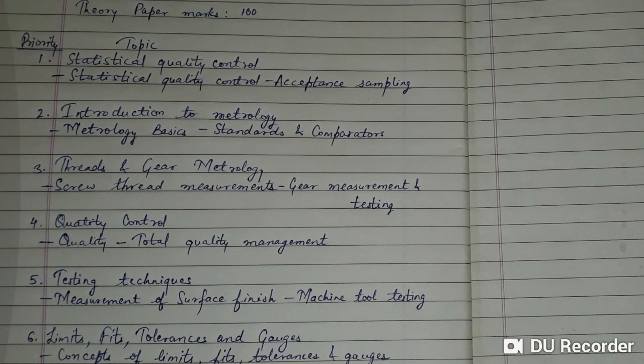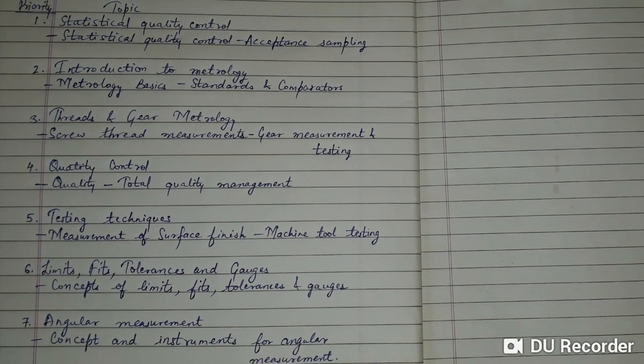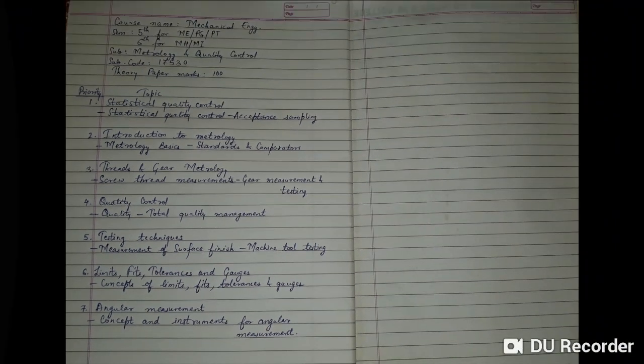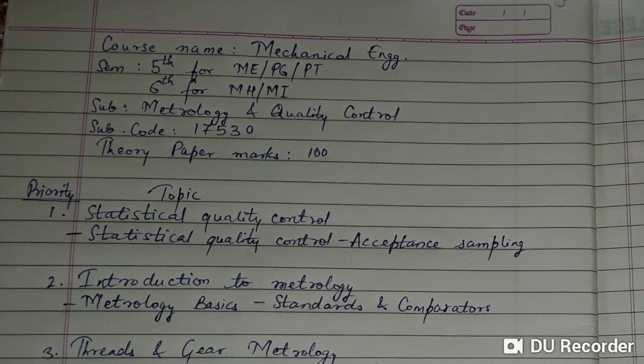So these are the priorities for the topics. Those who have limited time and want to confirm their passing should do the first 3 topics — Statistical Quality Control, Introduction to Metrology, and Thread and Gear Metrology — to get at least 50% or more marks. These 3 chapters must be done thoroughly, and those with limited time can follow these priorities to get good marks. This priority list is for Semester 5 and 6 for the subject Metrology and Quality Control.